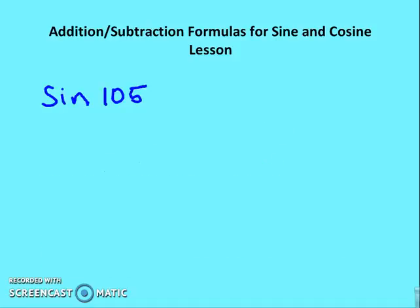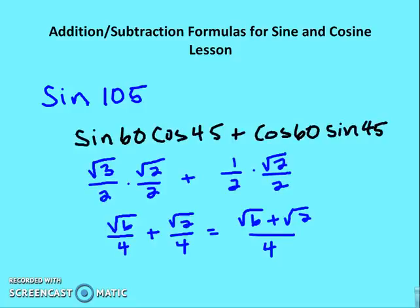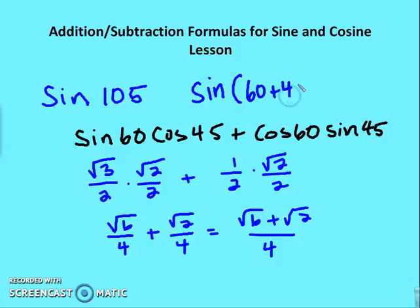Find the sine of 105° — I'll pause here while you figure that out. We're going to use 60° and 45°: sine 60° · cosine 45° + cosine 60° · sine 45° = (√3/2)(√2/2) + (1/2)(√2/2) = (√6 + √2)/4.